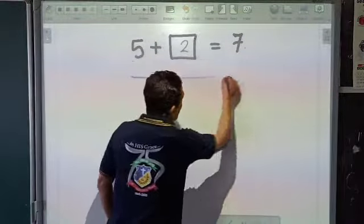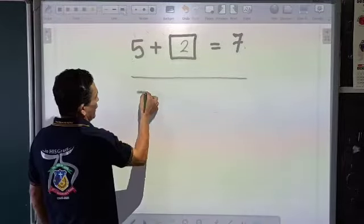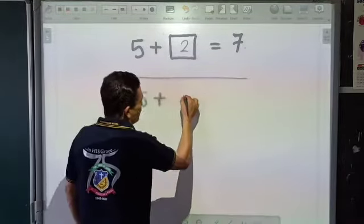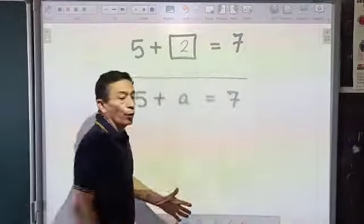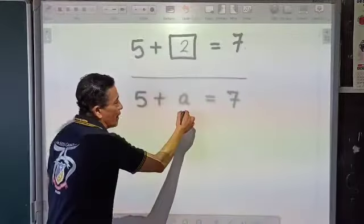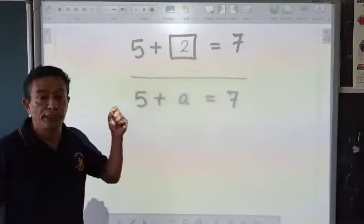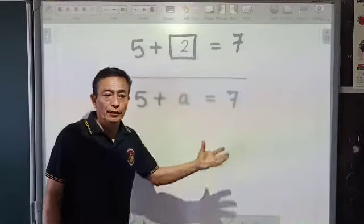Of course in those days you simply used to write 5 plus 2 is equal to 7. Moving on, what we are doing is instead of the box, now you are given an alphabet or a variable: 5 plus a is equal to 7. So from here you have to find the value of a.